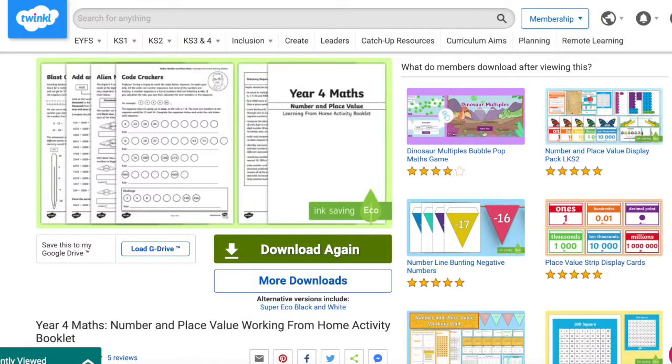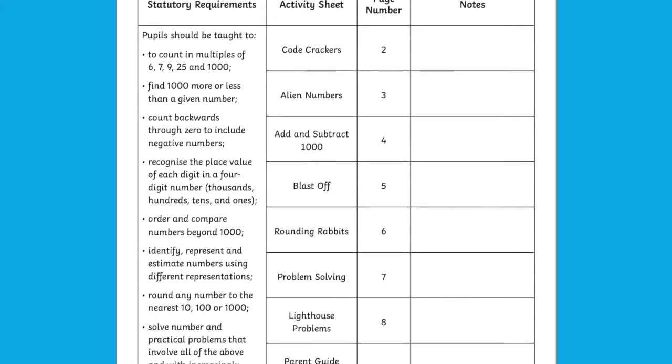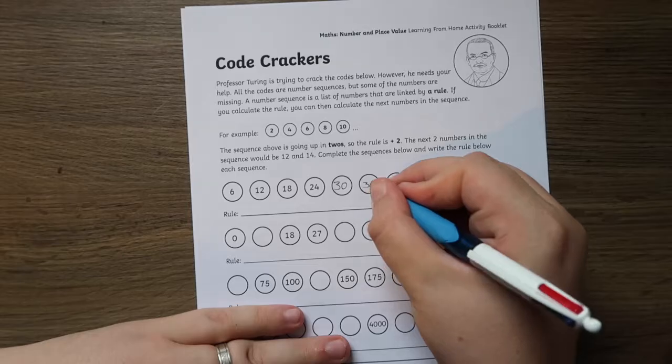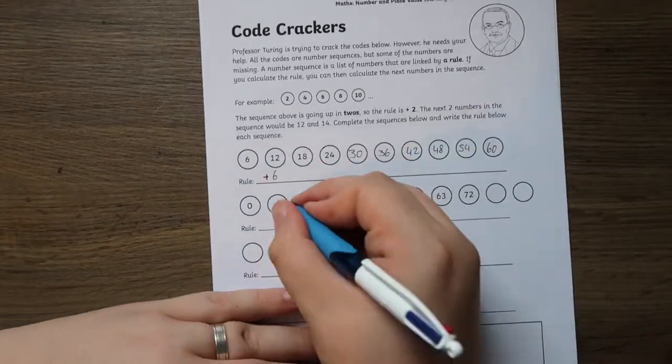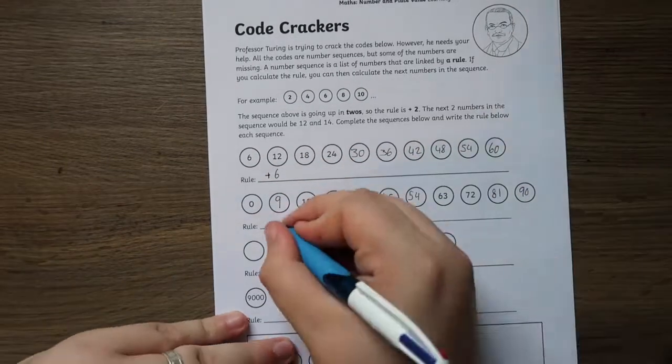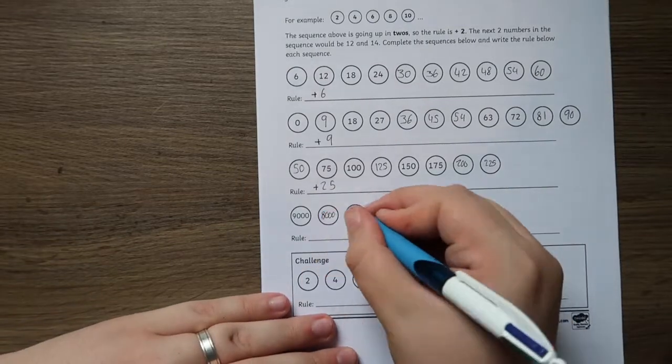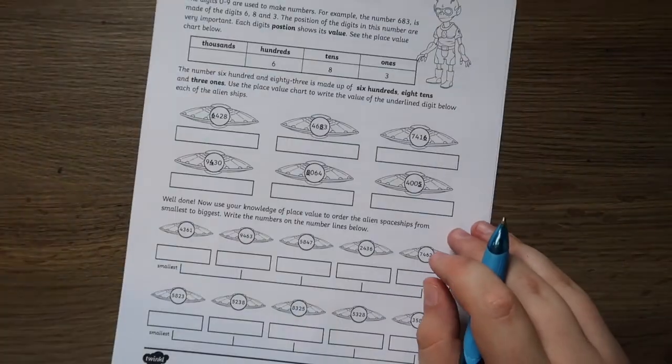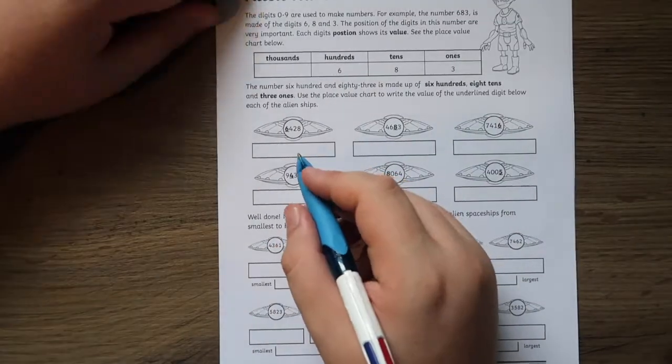The Year 4 maths number and place value working from home activity booklet is a great resource that can be used as the perfect home learning pack. It's a handy resource that can help you track progress against the national curriculum and support learning in maths at home. The activities are all based on areas that children should already have a good knowledge and understanding of, so this is perfect for children to complete independently.